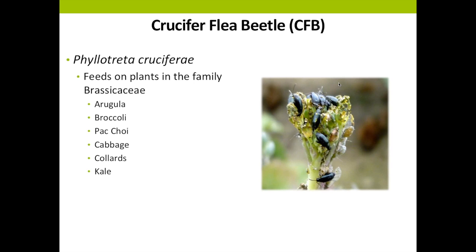These are plants in the cabbage family, including broccoli, kale, cabbage, bok choy, collards, and arugula. If you've grown Brassica crops, you've probably seen flea beetles before. Both the larval and adult stages have chewing mouthparts, but it's the adult stage that causes the most damage.